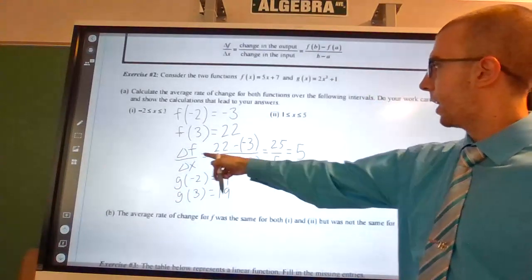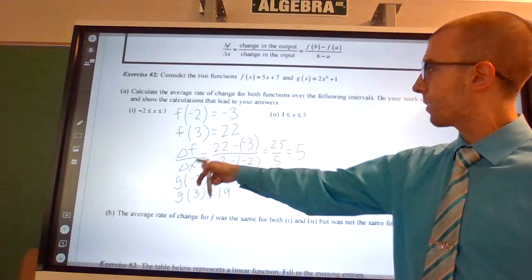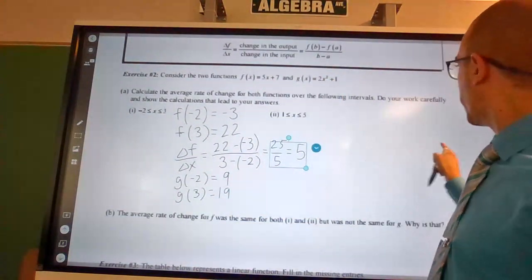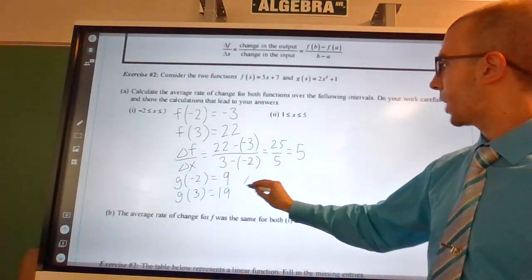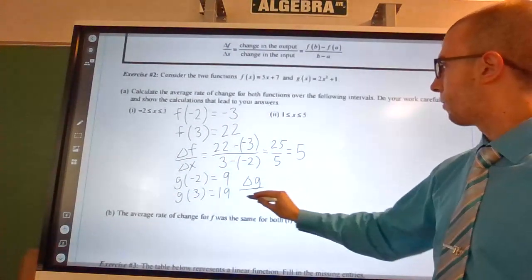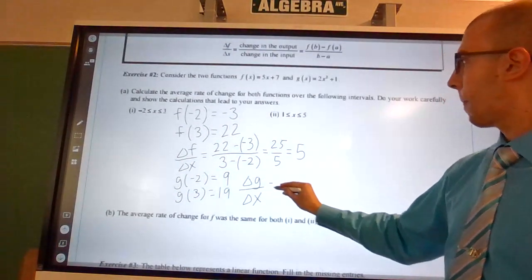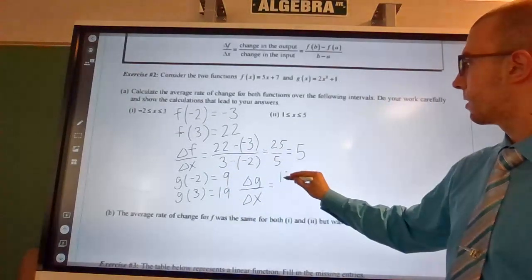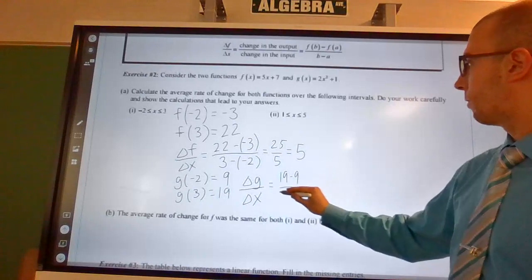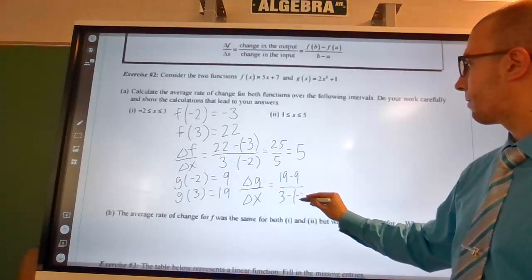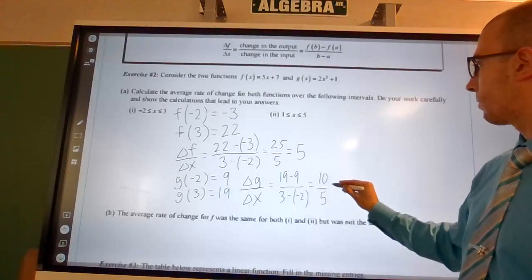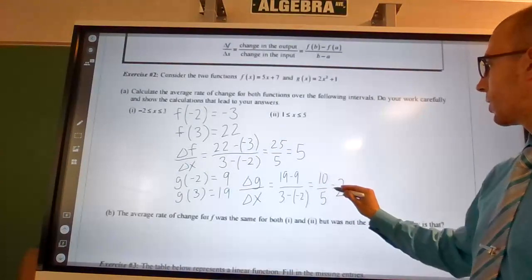So just like I did here, the change in f over change in x to get that average rate of change. Well, now I'm working with my g of x function. So I would do the change in g over the change in x. So now that will be 19 minus 9 over 3 minus negative 2, which comes out to be 10 over 5, which is 2.